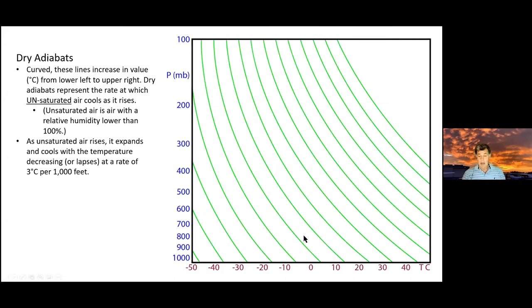The dry adiabat lines are very consistent and predictable — unsaturated lifted air that isn't saturated cools at exactly 3°C per 1,000 feet. We like these lines because they're uniform and play nicely with our data. Nice and predictable.